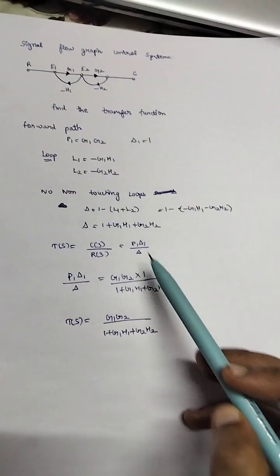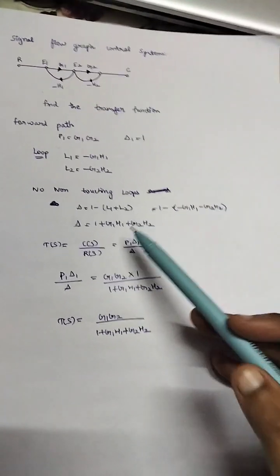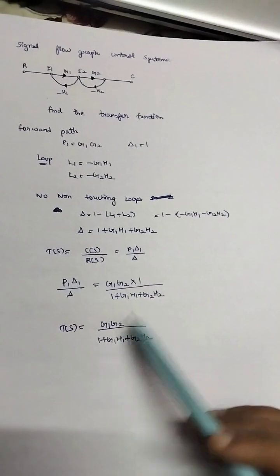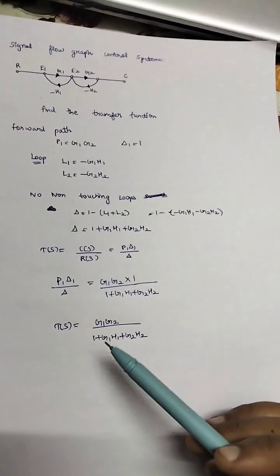So this is the delta. Transfer function is P1·Δ1 divided by Δ. Substituting the above, P1·Δ1 and Δ, the Δ1 is only one forward path, so it's 1. By substituting this, we get the transfer function as this.